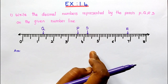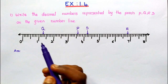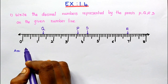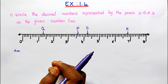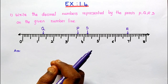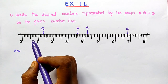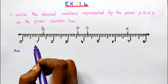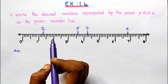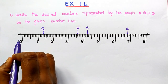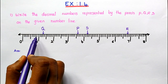This number line was explained in previous classes and previous standard — in geometry, that is the scale. How to measure numbers using a scale, that is a ruler — the same procedure we have to follow here. In that scale, centimeters and millimeters are there. Here, the decimal numbers and whole numbers are here, and the decimal part number is here.